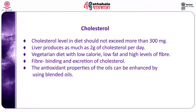Restriction of saturated fats and trans fat with inclusion of PUFA and MUFA are preferred to protect cardiac health. Moving on to cholesterol: the cholesterol level in the diet should not exceed 300 mg. The liver produces as much as 2 grams of cholesterol per day, and diet doesn't help much when cholesterol level raises above 260 mg per deciliter. Animal foods are the main source of cholesterol; no plant source contains it. A vegetarian diet low in calories, low in fat, and high in fiber is suggested to maintain serum cholesterol at a normal range, as fiber plays an important role in binding and excretion of cholesterol.